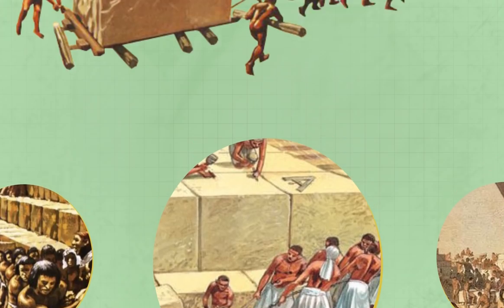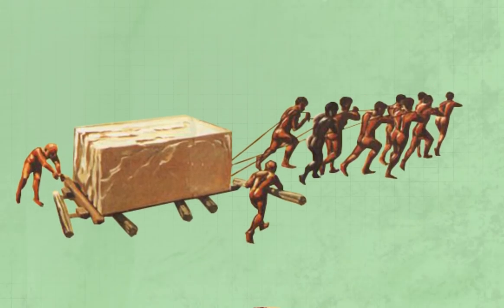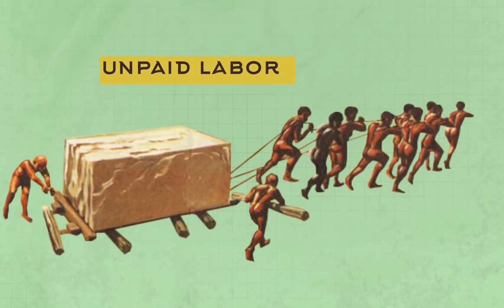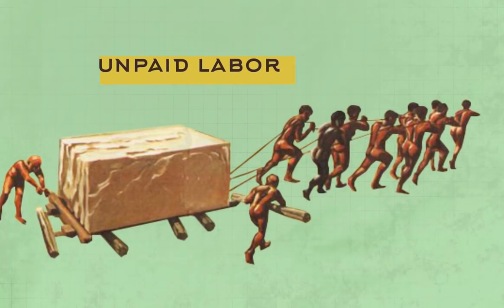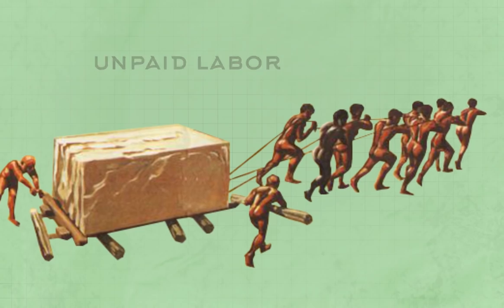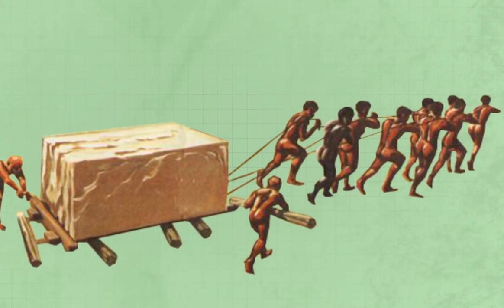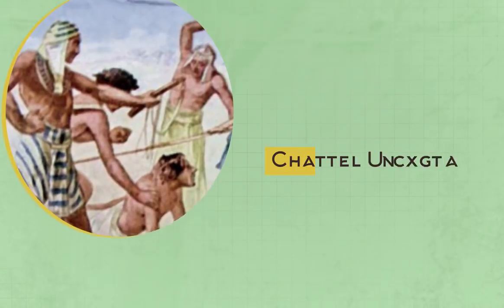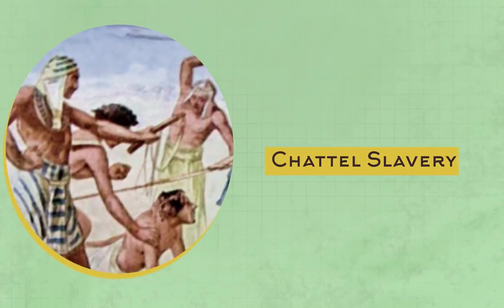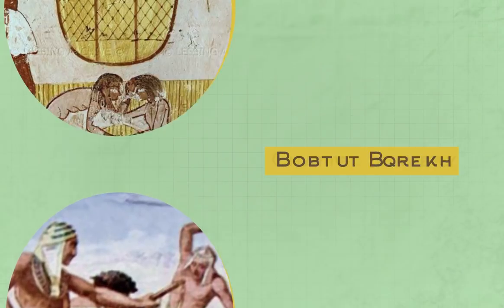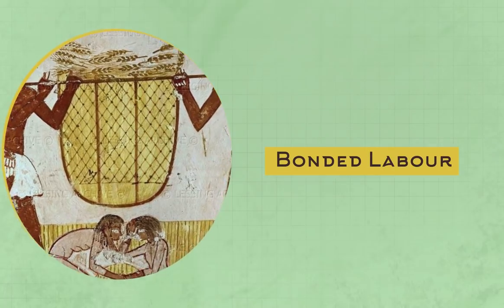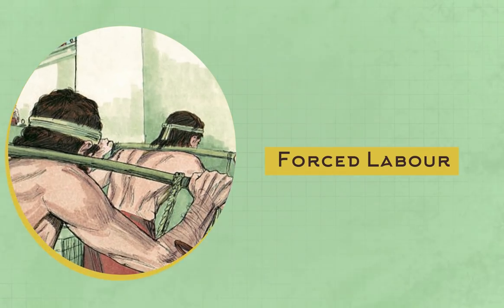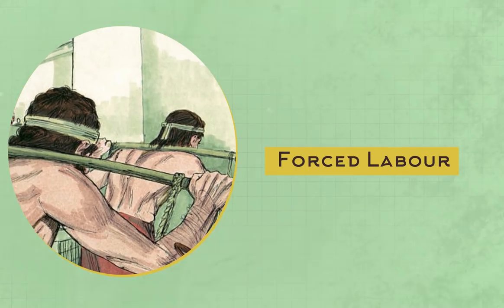If we take slavery, in the case of ancient Egypt, to mean unpaid labour or forced work, then three types of slavery were apparent in its history: chattel slavery, bonded labour, and forced labour. Let's take a closer look at these.